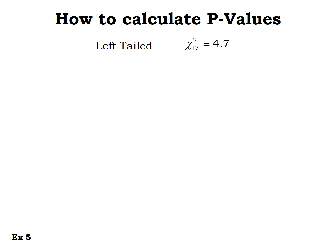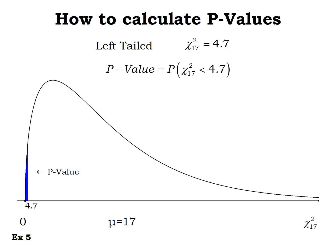Now let's look at chi-squared test statistics. For a left-tailed test with a chi-squared score of 4.7 and 17 degrees of freedom, the p-value is the area to the left — the probability of being smaller than 4.7. With 17 degrees of freedom the mean is 17, so 4.7 is on the far left of the graph. Using chi-squared CDF from 0 to 4.7 with 17 degrees of freedom, the p-value is 0.0015.